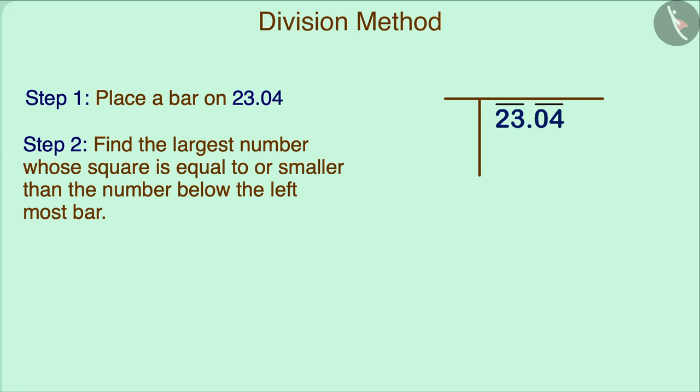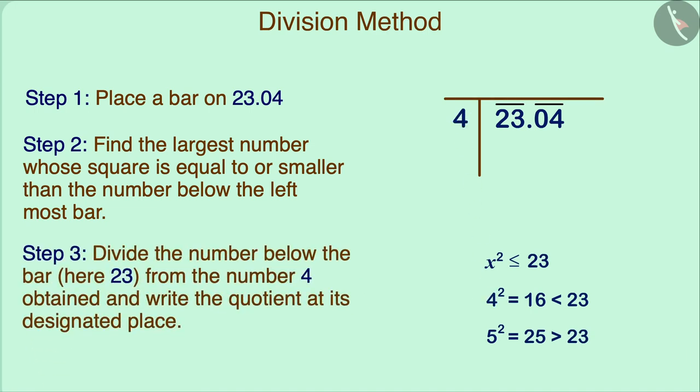After placing the bar here, the next step will be to find the largest natural number whose square is equal to or smaller than the number below the leftmost bar. That is, the number whose square is equal to or smaller than 23. The square of 4 is 16, which is smaller than 23, and the square of 5 is 25, which is larger than 23. Therefore, we will choose the number 4. The number 4 obtained is our divisor and also the first digit of the square root of this number, which we will write in the quotient. Considering the number below the leftmost bar as 23 and writing 16 below it, we will find the remainder. The remainder obtained here is 7.